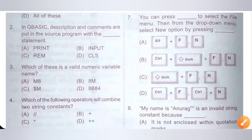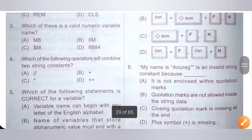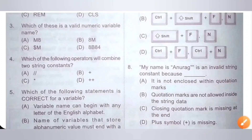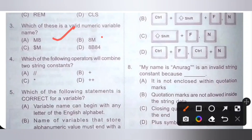Third question: which of these is a valid numeric variable name? The options are A) M8, B) 8M, C) $M, D) 8B84. A numeric variable name should start with an alphabet and should not end with a dollar sign. Option B starts with a number, option C starts with a dollar sign, and option D starts with a number — so option A is the correct answer.